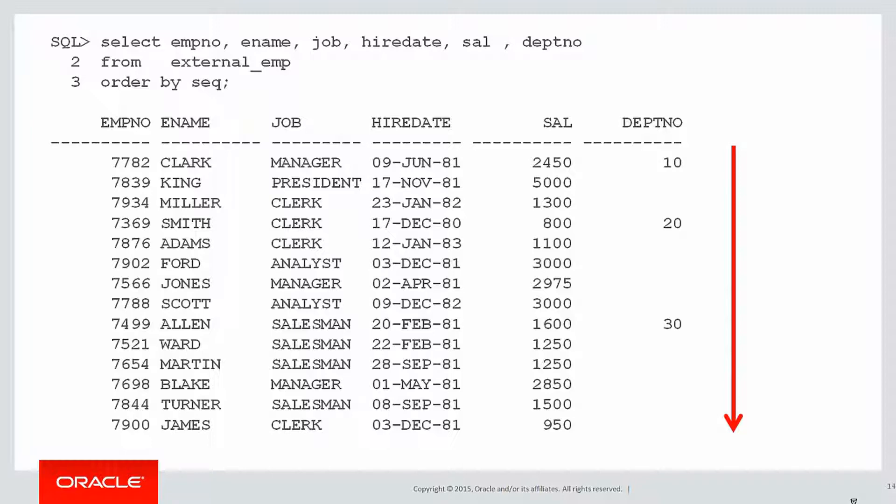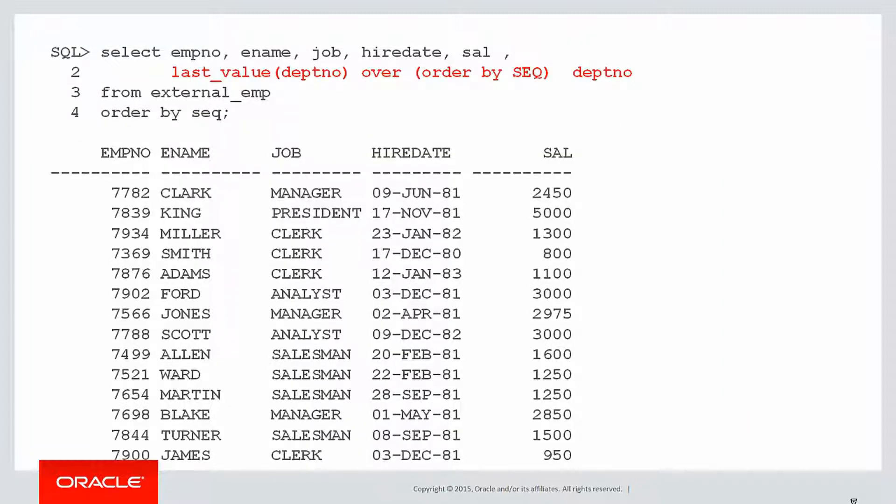We've just done first_value and last_value. So we might think what we'll do is we'll just whack a last_value in there, and that'll simply pull the department number down as we go throughout the window.